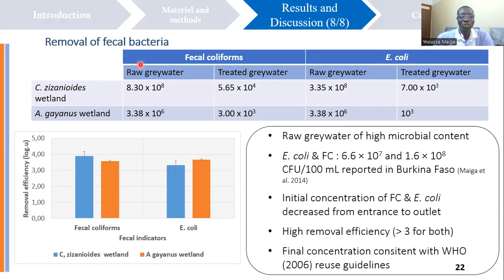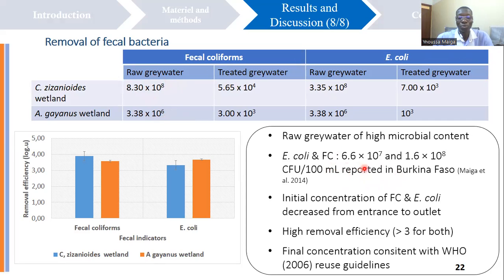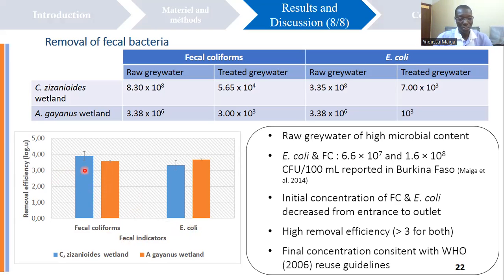Regarding microbiological pollution, the raw greywater had a high content of fecal coliforms and E. coli, with values of 8.30 × 10⁸ CFU per 100 milliliters for the first household, and also high values in the second household. These high values have already been reported by previous studies in Burkina Faso. The system performed well in terms of the elimination of fecal bacteria, with a removal efficiency of up to 3 log units for both fecal coliforms and E. coli.